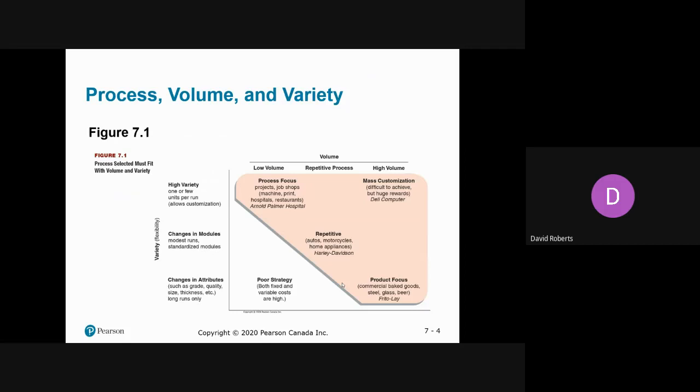You then have a repetitive process. The best way to understand this would be things like making automobiles, motorcycles like Harley-Davidson, Kawasaki, Suzuki. Product focus is where you have a combination of higher volumes and there is some differentiation. Examples include a bakery where they would make batches of buns or bread, beer like Big Rock breweries in Calgary.